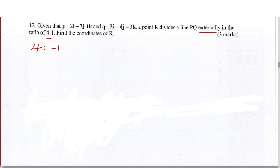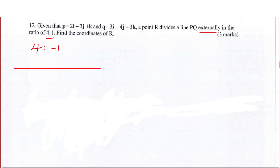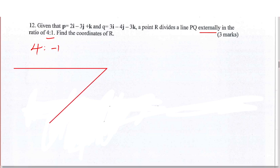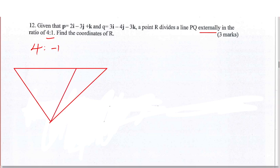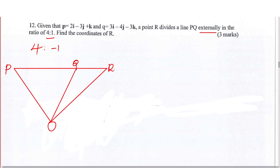I will explain how we work out these coordinates of R using a diagram. Let me draw the diagram showing the position vectors of P, Q, and R. So these are where we have P, this is Q, then R divides the line PQ externally.